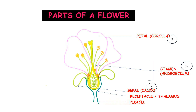A stamen comprises two parts: the filament and the anther. Stamens are long thread-like processes which project out and usually end in a bi-lobed tip. The thread-like portion is the filament, and the bi-lobed structure is the anther. The anther is a sac-like structure within which the pollen grains develop.